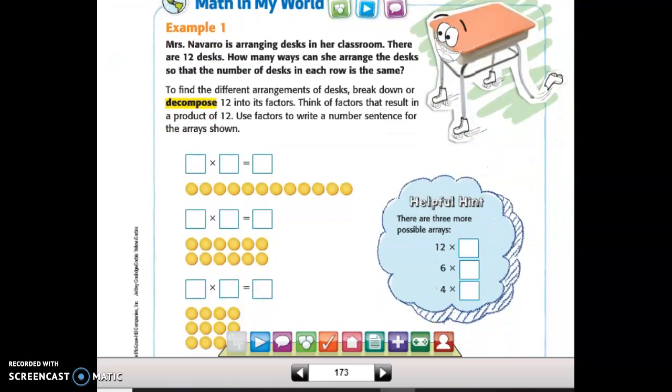Example number one. Mrs. Navarro is arranging desks in her classroom. There are 12 desks. How many ways can she arrange the desks so that the number of desks in each row is the same? To find the different arrangements of desks, break down or decompose 12 into its factors. Think of factors that result in the product of 12. Use factors to write a number sentence for the arrays shown.